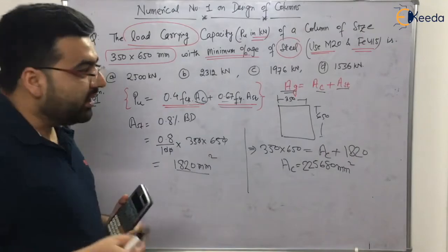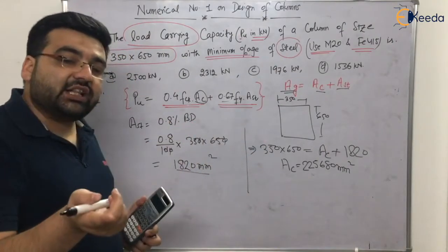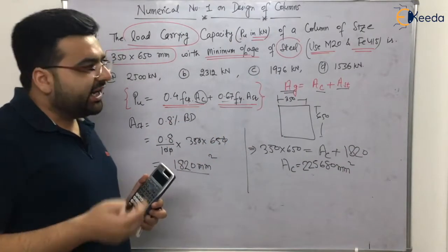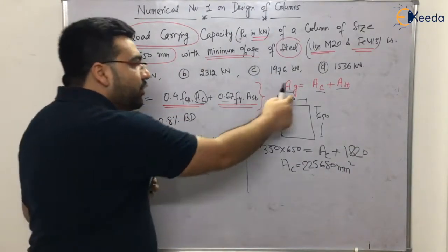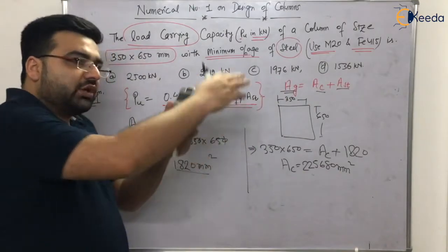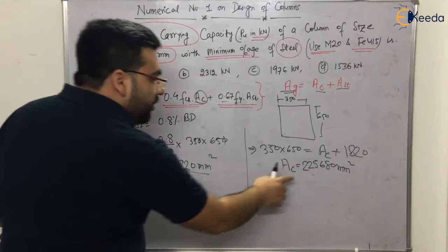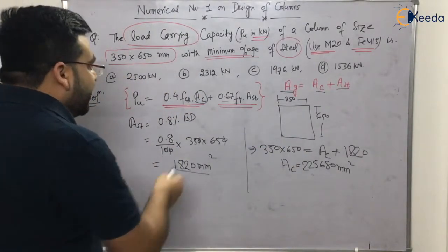I hope everybody has understood. In 2019 the question came where also AC or AST was not given. It was a very simple question if you know this thing—it's common sense. The total area will be equal to concrete area plus steel area. Now let me just put down the formula and you will get the answer.